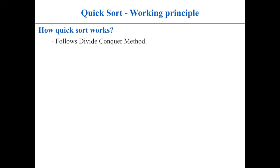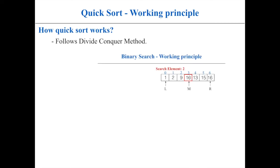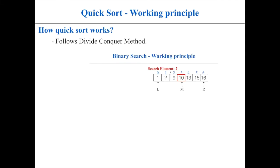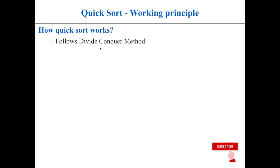The basic idea behind quicksort is to use the divide and conquer method, similar to how the binary search algorithm works. In binary search, the array is divided into two sub-arrays by selecting the middle element as a key. The search element is compared with this middle element — if equal it returns the index, if less it searches the left sub-array, and if greater it searches the right sub-array.